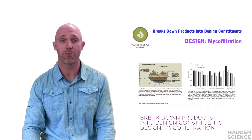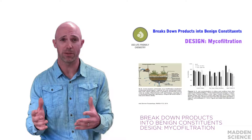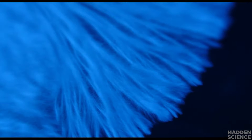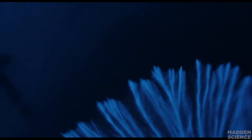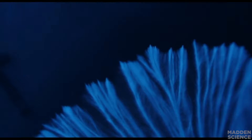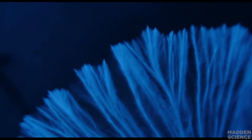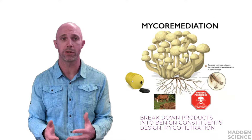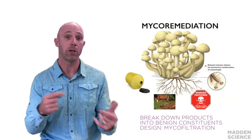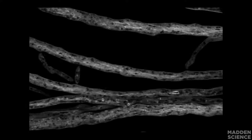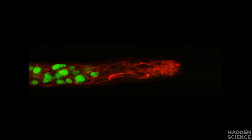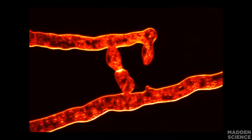Mycofiltration is a design process that uses mushrooms and fungi to clean and act as biofilters. It's a creative example of the life's principle: breakdown products into benign constituents. Fungi in their mycelial network act as growing, living biofilters placed in stream beds or farm runoff locations where they break down products into benign constituents. Mycofiltration functions include killing bacteria like E. coli, lowering coliform levels, and acting as mycofilters for micro-remediation and absorbing toxic metals from water supplies. An additional function is that the biofilters in stream beds can help decrease erosion and help renew soils.